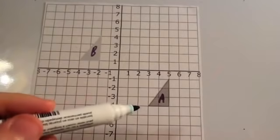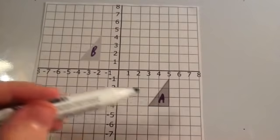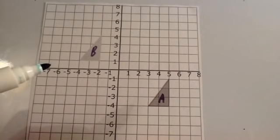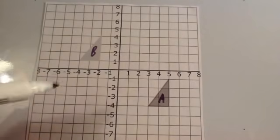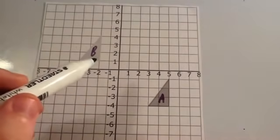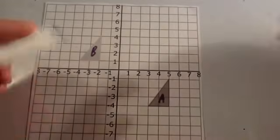Okay, this question has given you a shape A, and it is said that it's been translated to the position of B, and it wants to know what the column vector would be to describe the translation. So as there's been no rotations or reflections, you can see that A has been moved or slid to get B. Then we know it's a translation. Let's see how it's been translated.